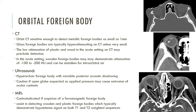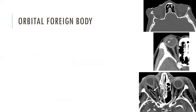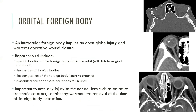MRI is contraindicated if there is suspicion of a ferromagnetic metallic orbital foreign body, as there is risk that movement or heating of the foreign body will cause additional injury. If the foreign body is confirmed to be non-metallic, non-contrast MRI of the orbits can assist in detecting wooden and plastic foreign bodies which may be missed on CT. Foreign bodies will typically demonstrate hypointense signal on both T1 and T2 sequences. The imaging report should include the specific location of the foreign body within the orbit, the number of foreign bodies, the composition, and any associated ocular or extraocular orbital injuries.